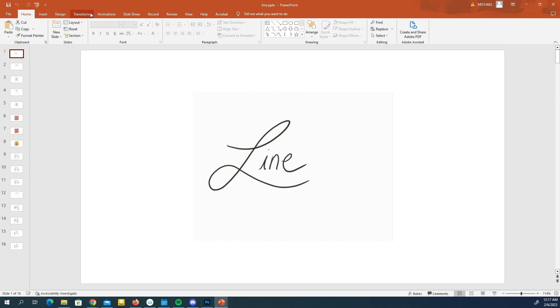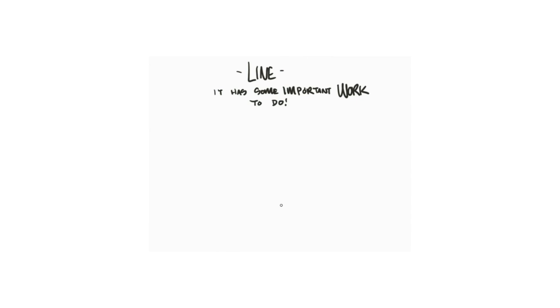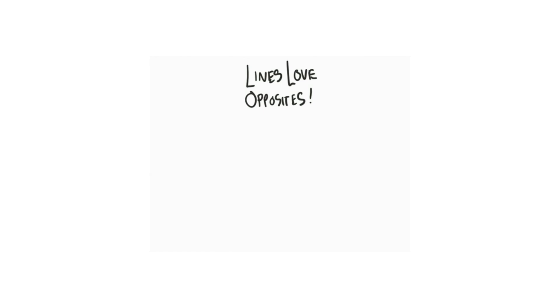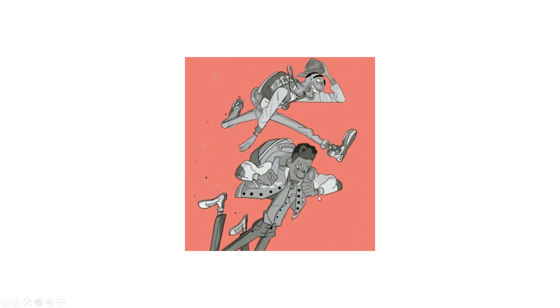Moving to the line lecture — line is the basic building block of drawing and it has a lot of important work to do: it defines our shape, builds our structure, clarifies location, and explains action. Lines love opposites: short and long, straights and curves, thick and thin. You can see all of that in these characters — thick-to-thin tapering on the arms.